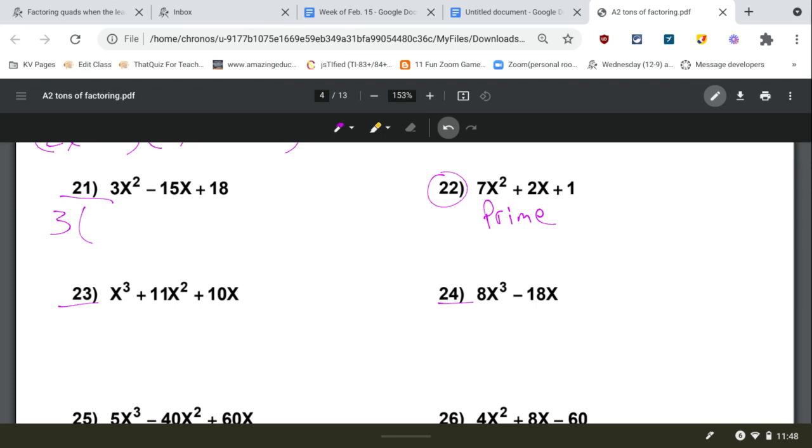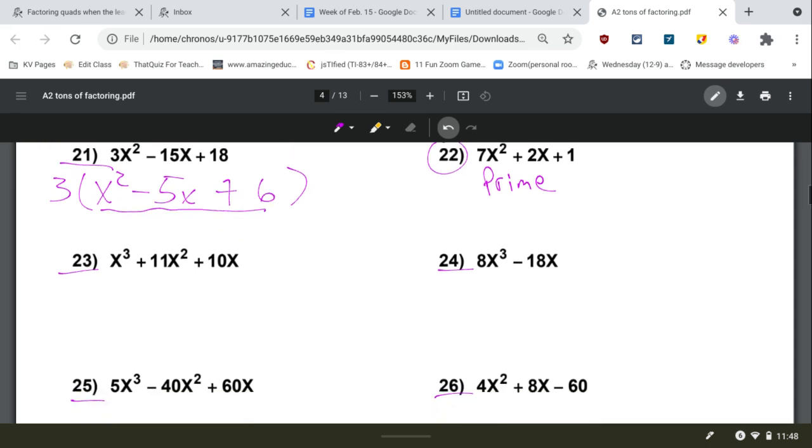So it would be an x squared there, and the 15x would become a 5, and the 18 would become a 3. And then you would just factor this expression using the normal cases because now it's a leading coefficient of a 1.